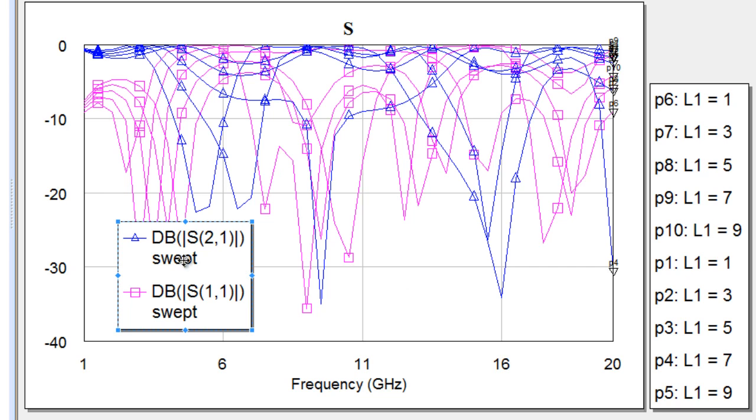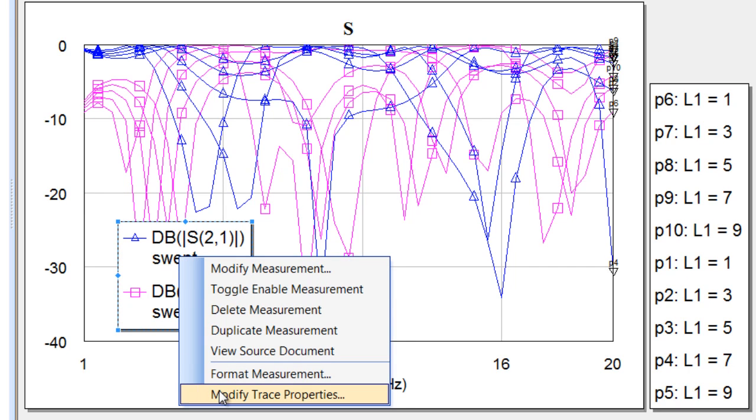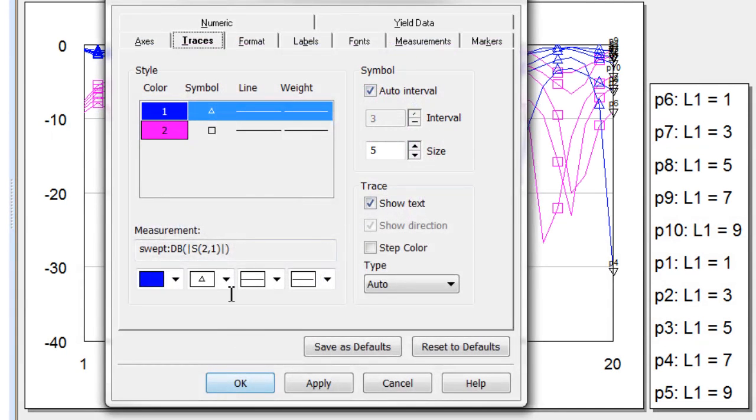Another thing that we can do is we can go to that measurement, modify trace properties, and it takes us to the appropriate menu immediately for that trace.